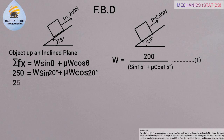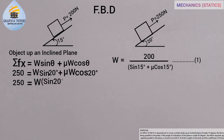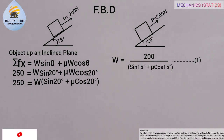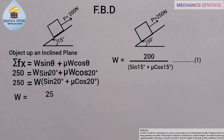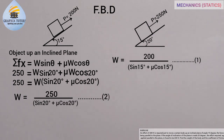This gives us 250 equals W times (sine 20 + mu cos 20), since W is common to both terms. Making W the subject of the formula, W equals 250 divided by (sine 20 + mu cos 20). We'll call this equation two.